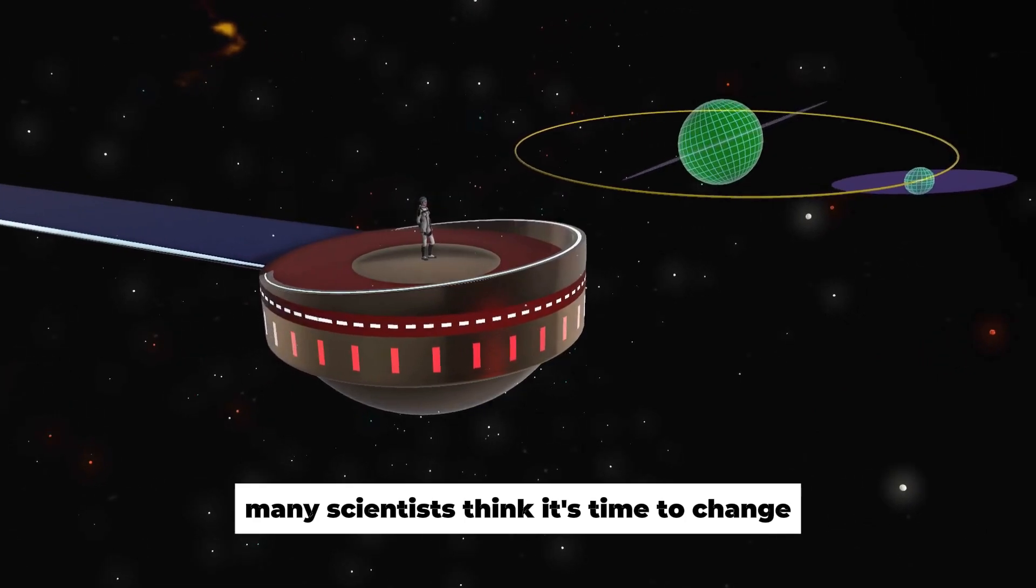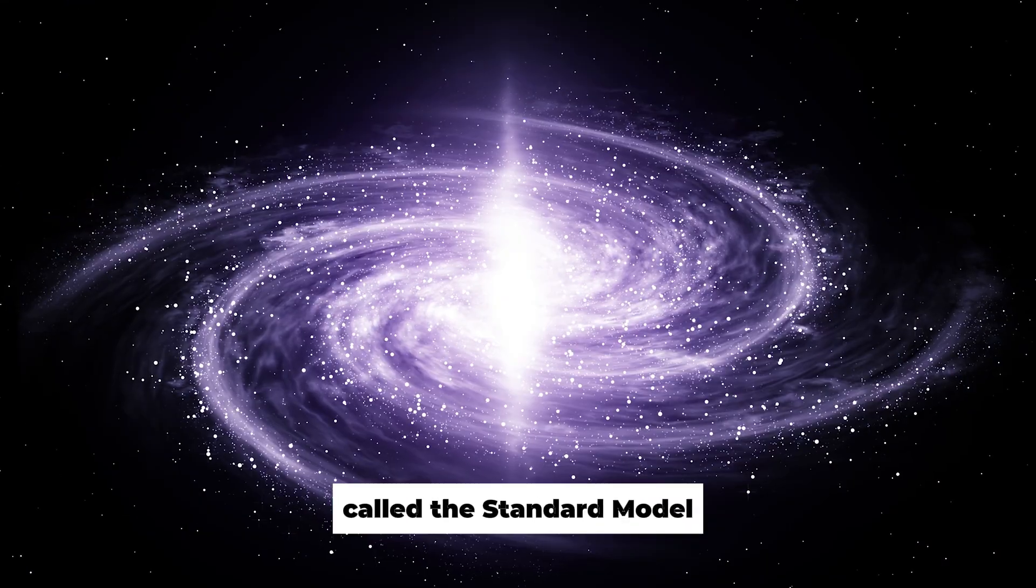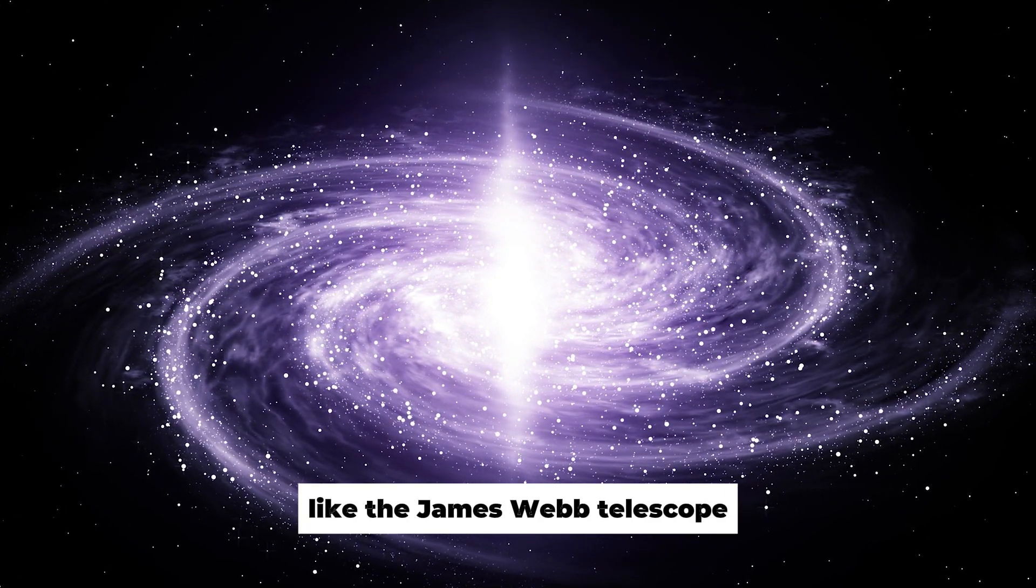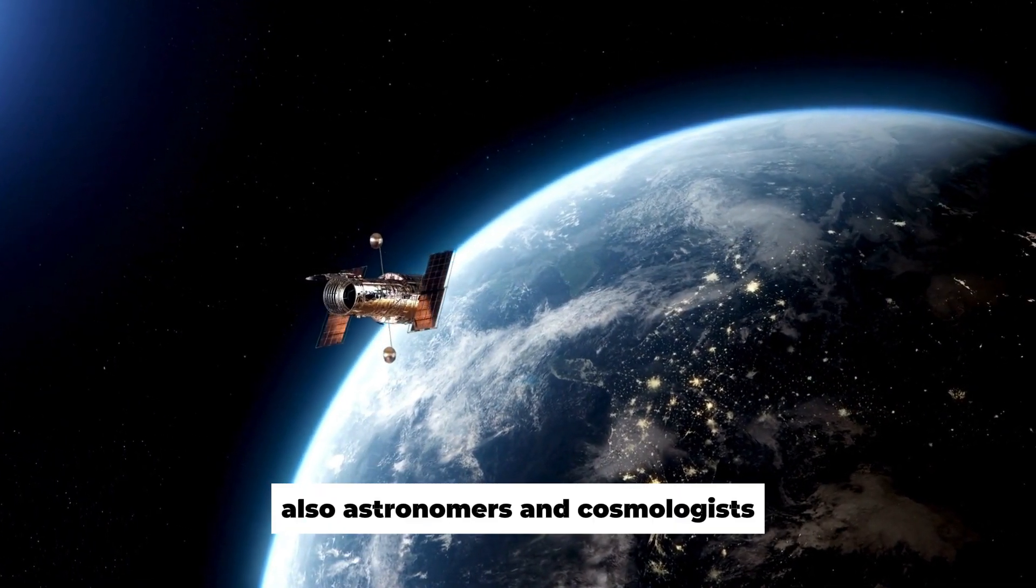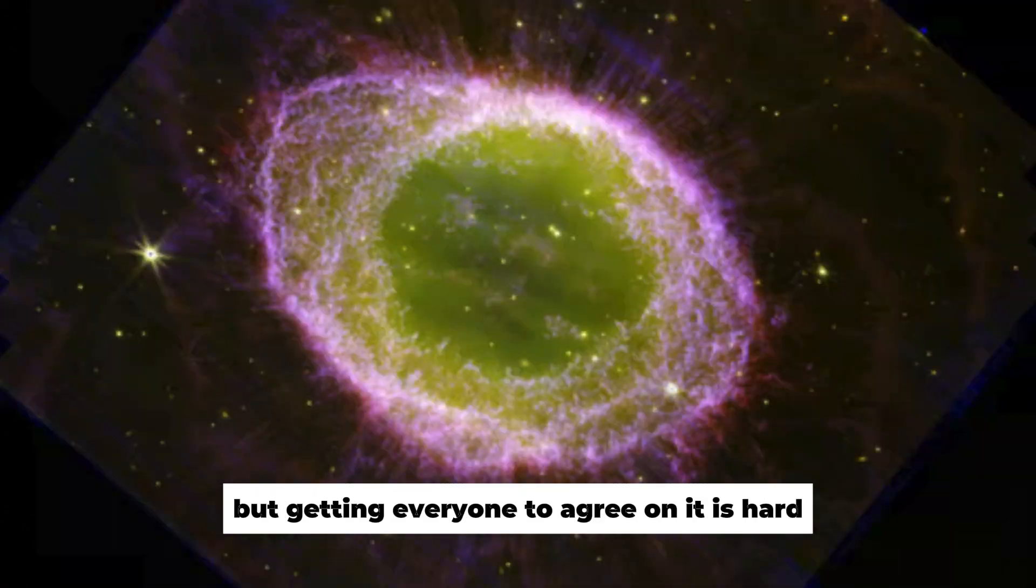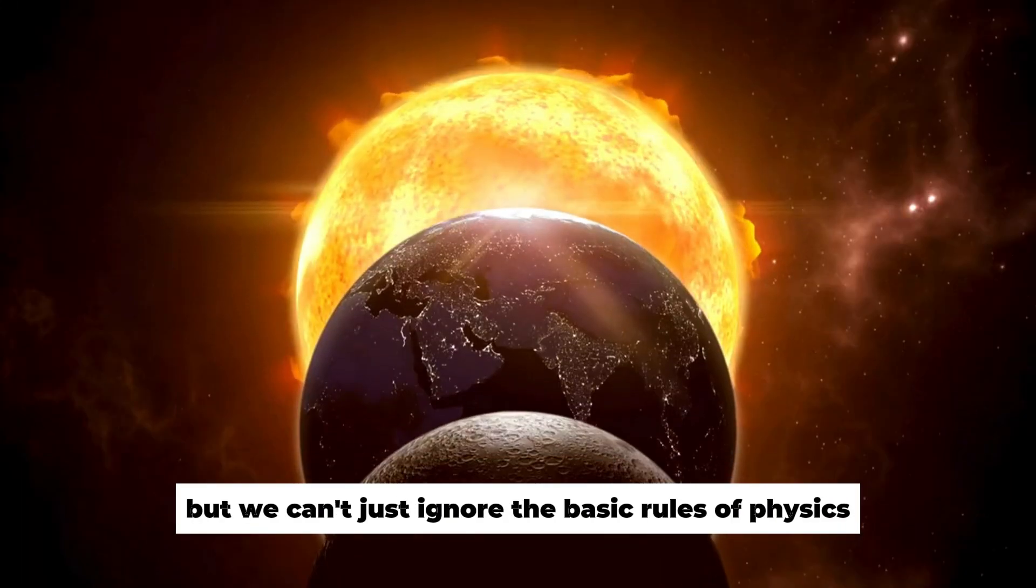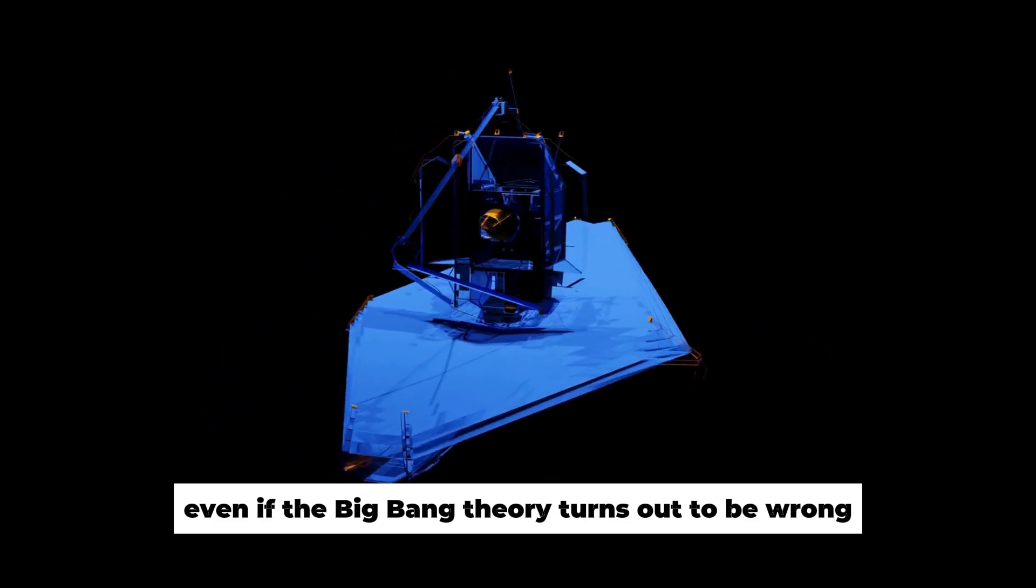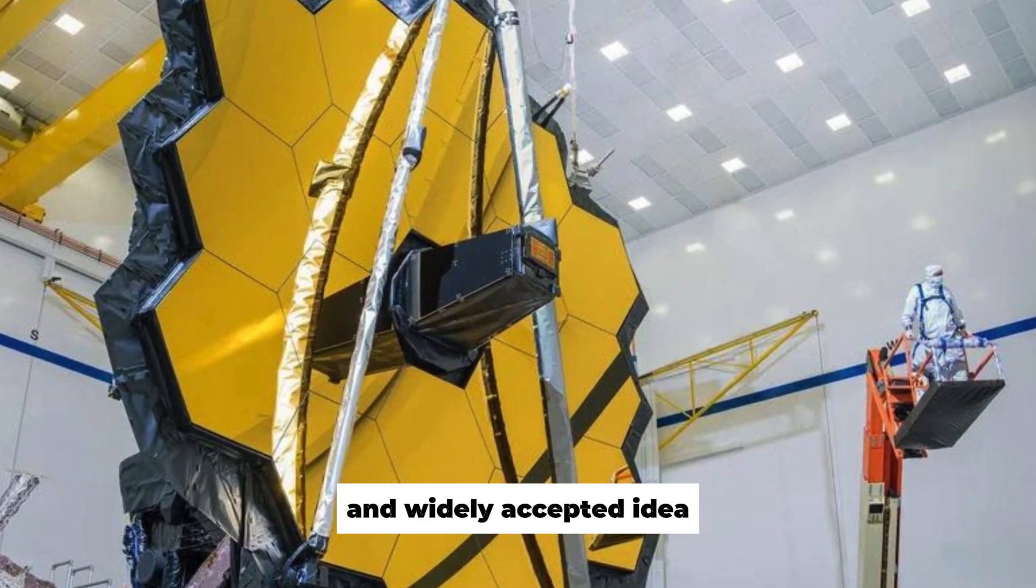Many scientists think it's time to change how we understand the universe. They believe we should stop using the old way of thinking called the standard model and start fresh. When the standard model was created, we didn't have powerful tools like the James Webb telescope. This makes some scientists think we should let go of old ideas and make a completely new model. Also, astronomers and cosmologists agree that we need a new way of thinking, but getting everyone to agree on it is hard. It's a challenge to make sure the whole scientific community is on the same page, but we can't just ignore the basic rules of physics as we search for new answers. Even if the Big Bang theory turns out to be wrong, scientists have few choices. They have to stick to it until a better, more advanced, and widely accepted idea comes along.